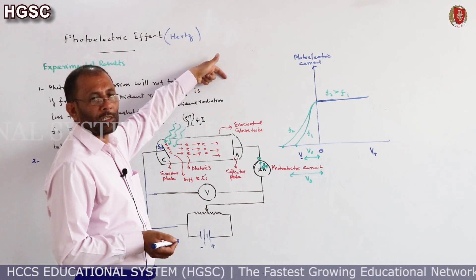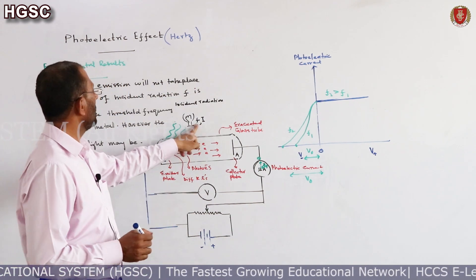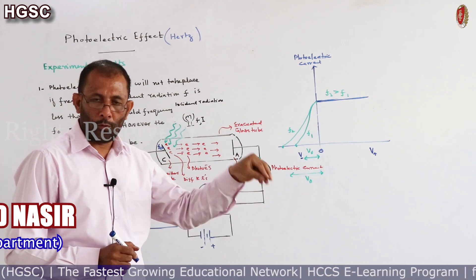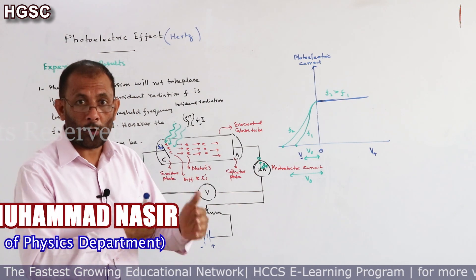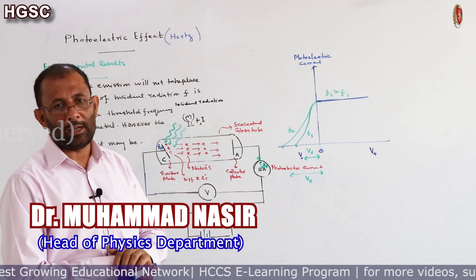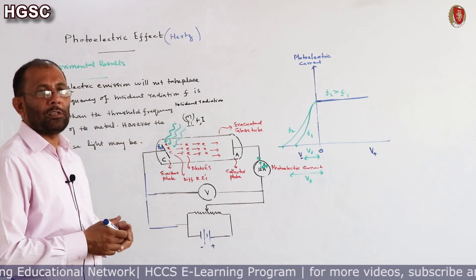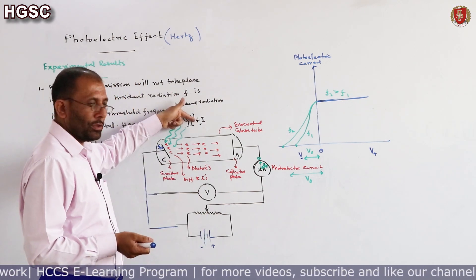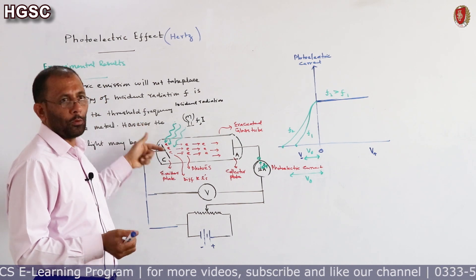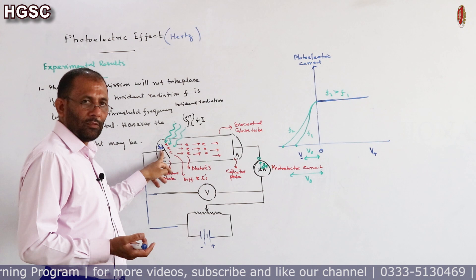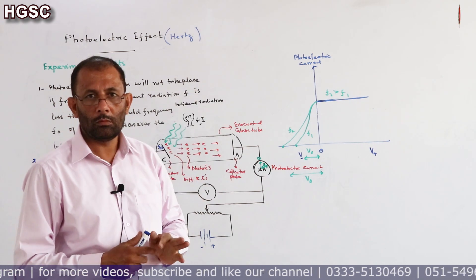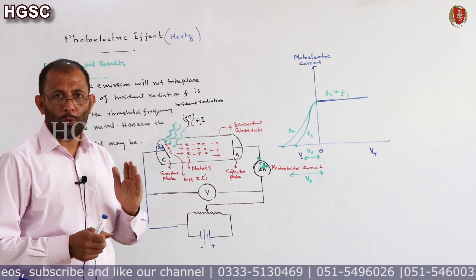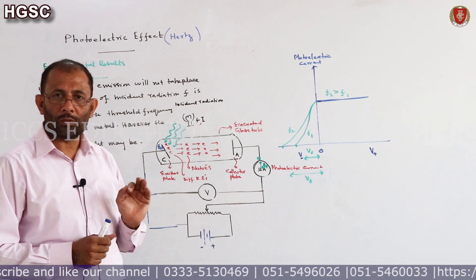Even if you reduce the intensity of light, if the frequency equals or exceeds the threshold frequency of the metal, photoelectric emission will occur instantly — photoelectric effect will happen immediately. You can decrease the intensity, or increase it — as long as frequency is at or above threshold frequency, photoelectric effect will occur right away.